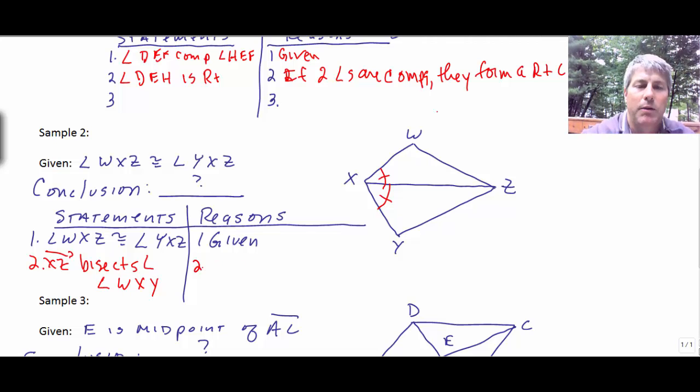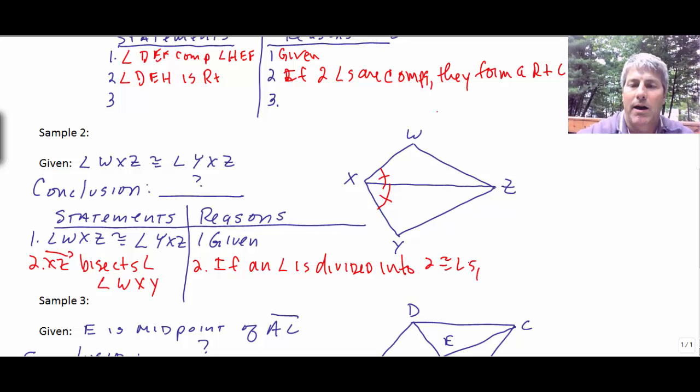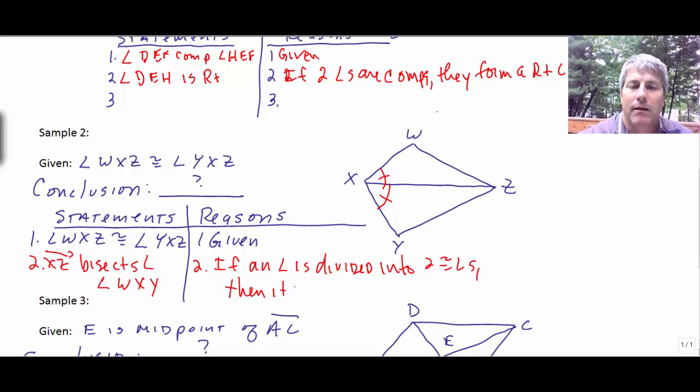And our reason would be, if an angle, this is a little bit tough because it's our converse. If an angle is divided into two congruent angles, okay? So, that's our if part. Our if part generally refers to something we've already established. We've got two congruent angles. Then, it has been bisected.